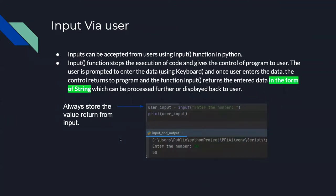You can get input from a user using the input function in Python. The input function stops the execution of the code and gives control of the program to the user. The user is prompted to enter data using their keyboard, and once they hit enter, control returns to the program. The function returns the entered data in the form of a string — it will always be a string, which is very important.